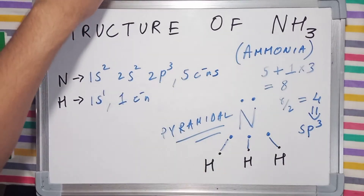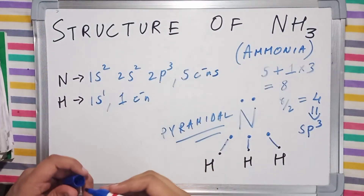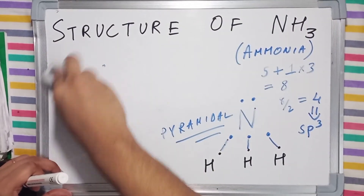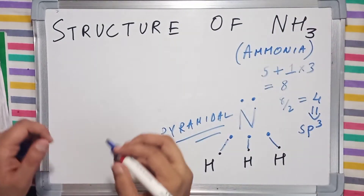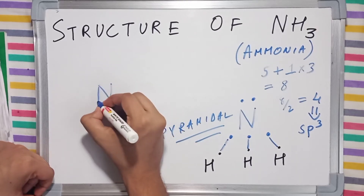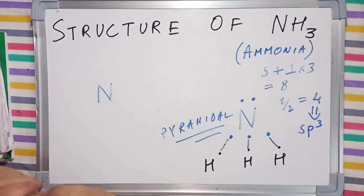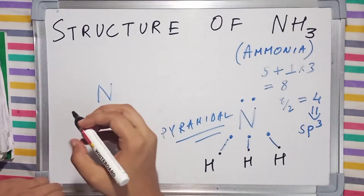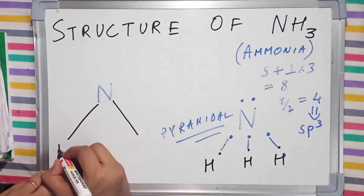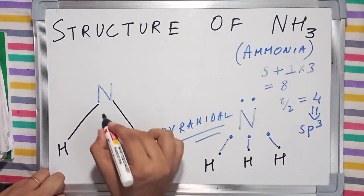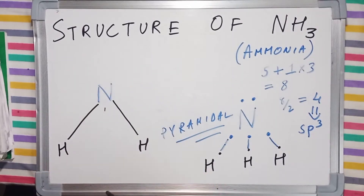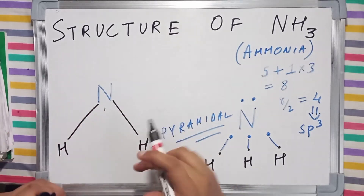I am going to draw a 3D diagram on this 2D plane of this ammonia molecule so that you get a better understanding of the structure. Our central atom is nitrogen and it will have 3 hydrogen atoms. The middle hydrogen bond will be behind these 2 bonds.